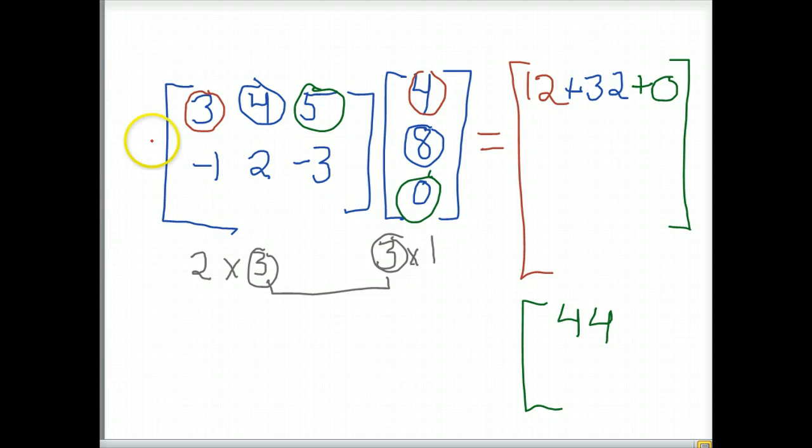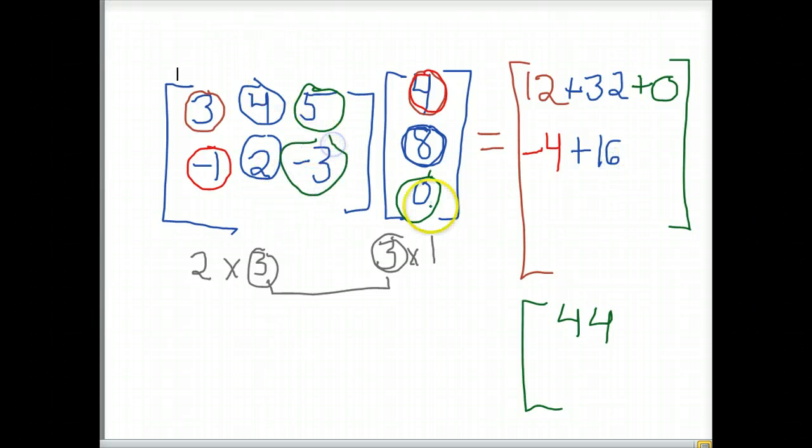We will follow a similar pattern with our second row of our matrix, being very careful with our signs. Negative 1 times positive 4 is negative 4. Then we move to the middle. 2 times 8 is a positive 16. And lastly, negative 3 times 0 is 0. Being very careful with the signs, we see negative 4 plus 16 is 12. The product of these two elements is the two-dimensional vector 44, 12.